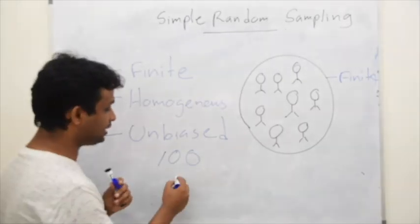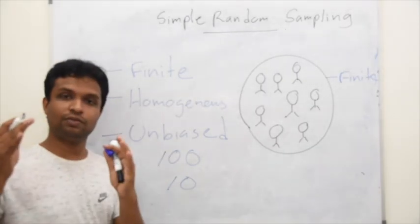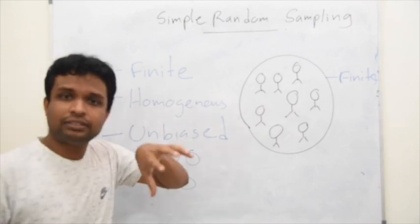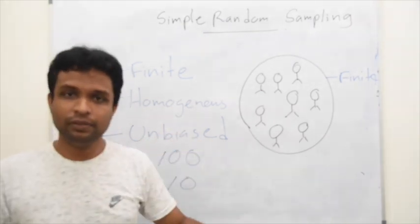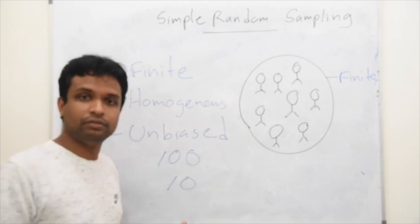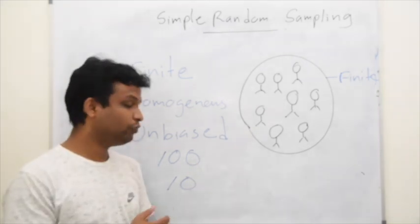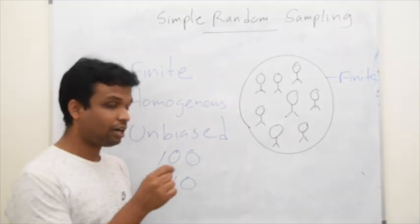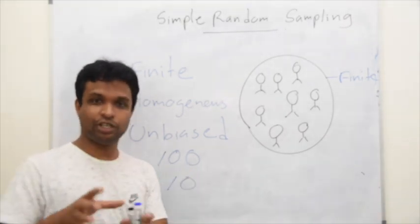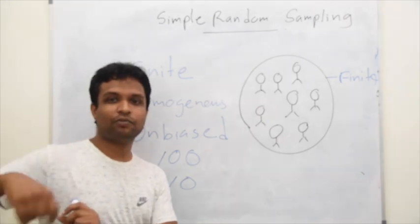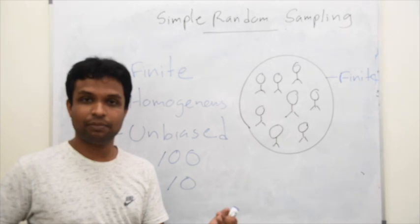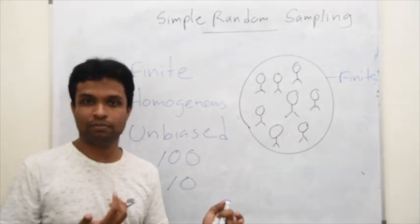Assume that our sample size is 10. We need to take only 10 individuals. We can take 10 random people for the sample. For more accurately, we can follow lottery method. We can take 100 lotteries, put in a box, and we take 10 lotteries randomly and we see the numbers and we take those 10 individuals to the sample.